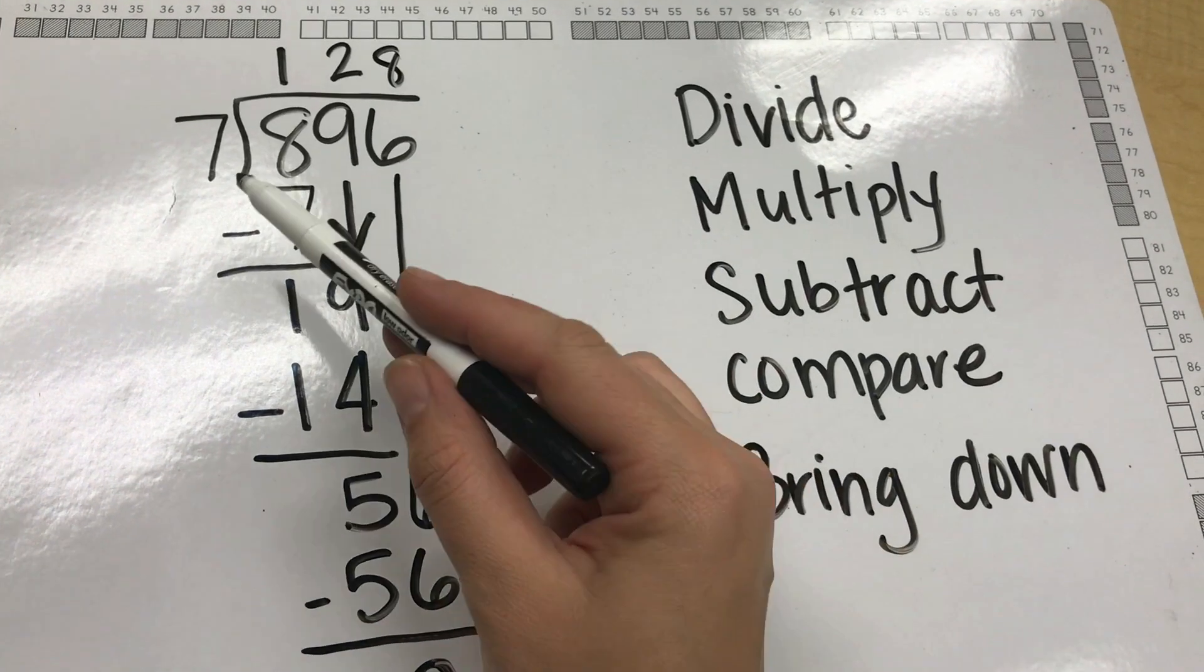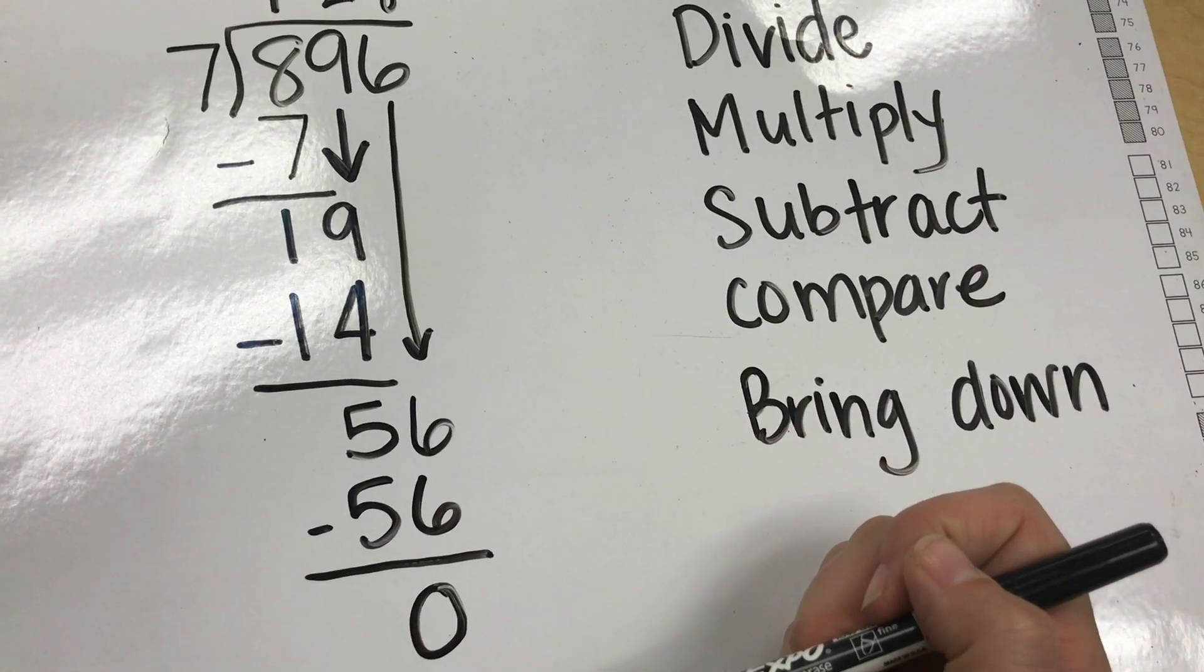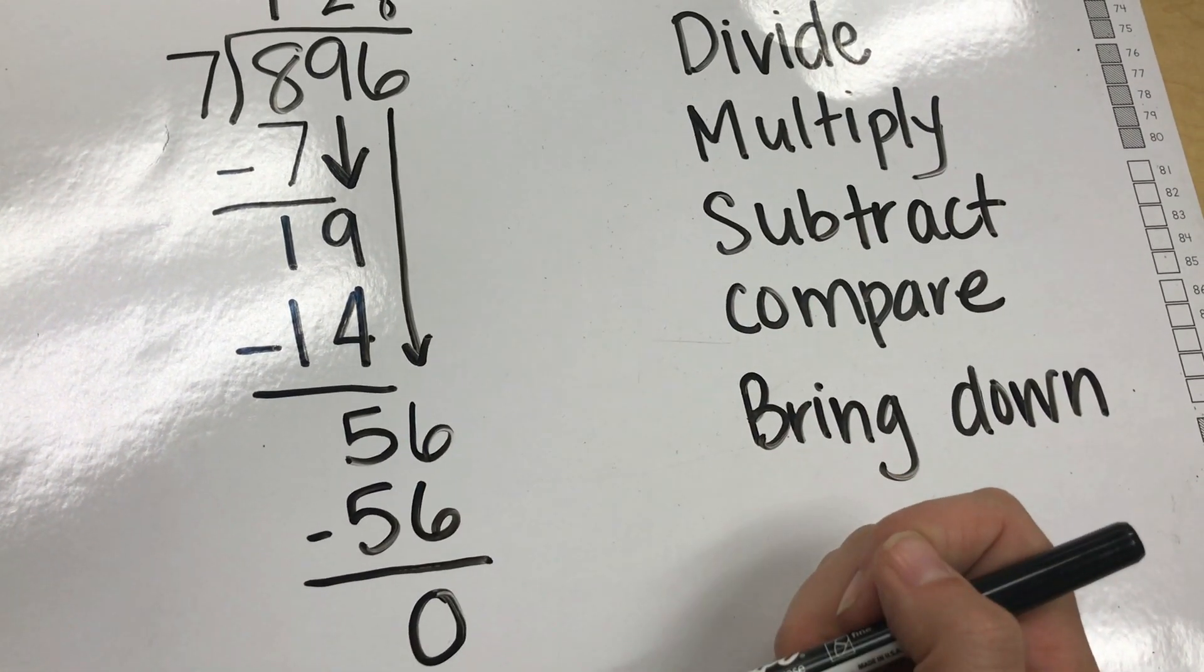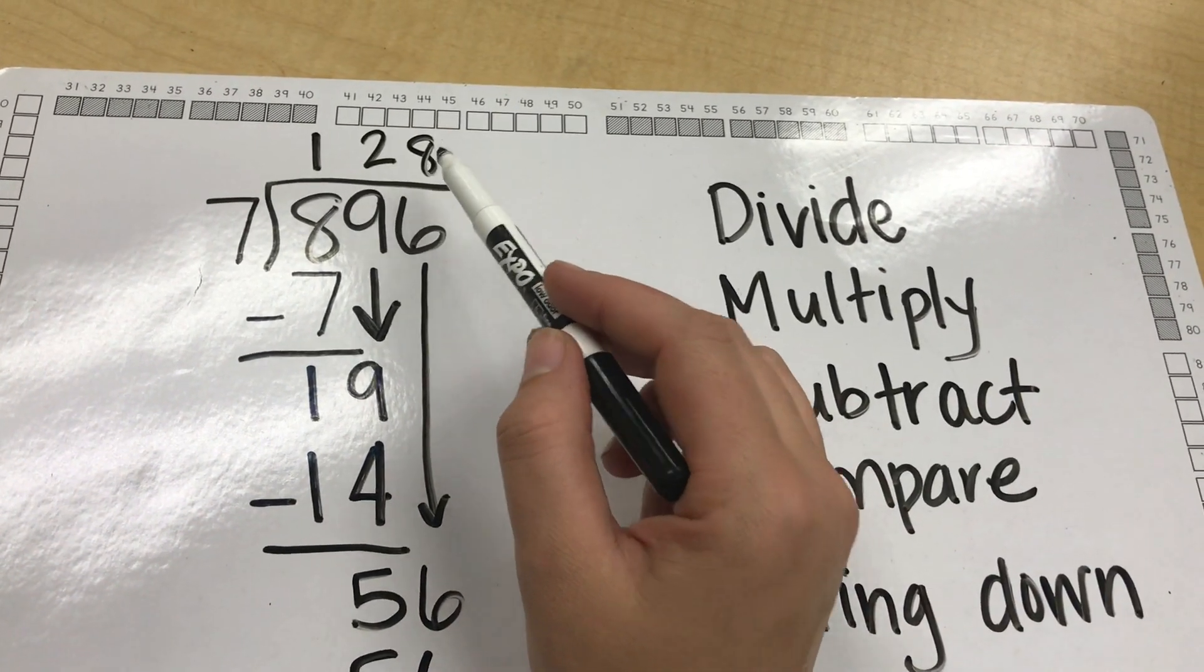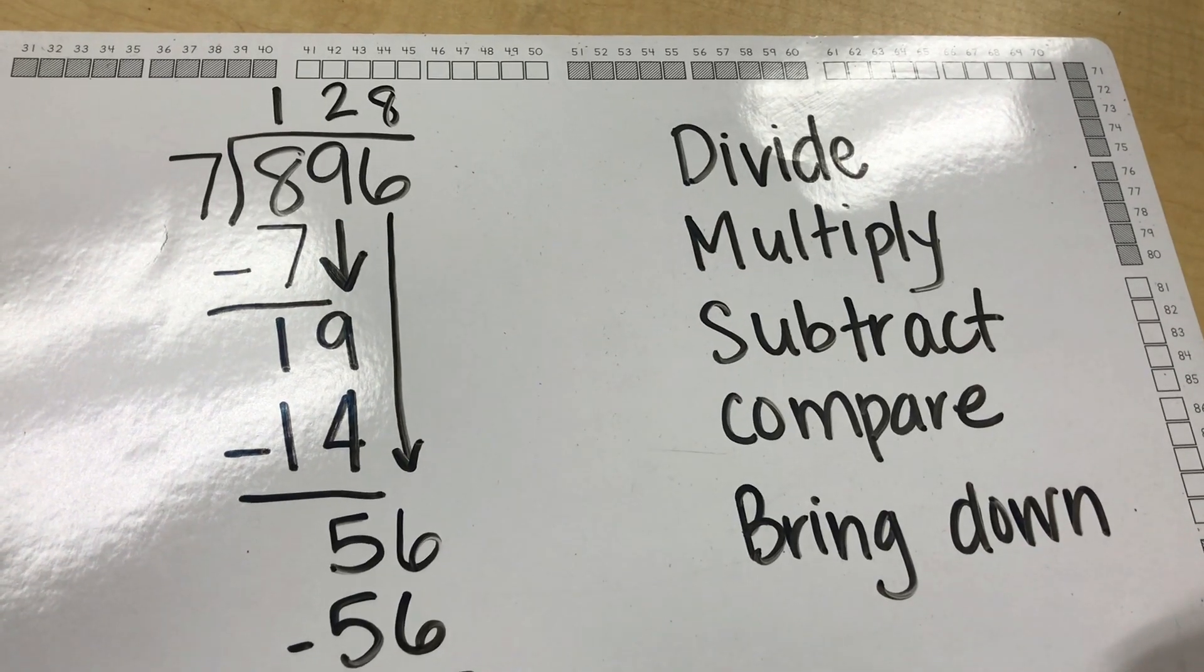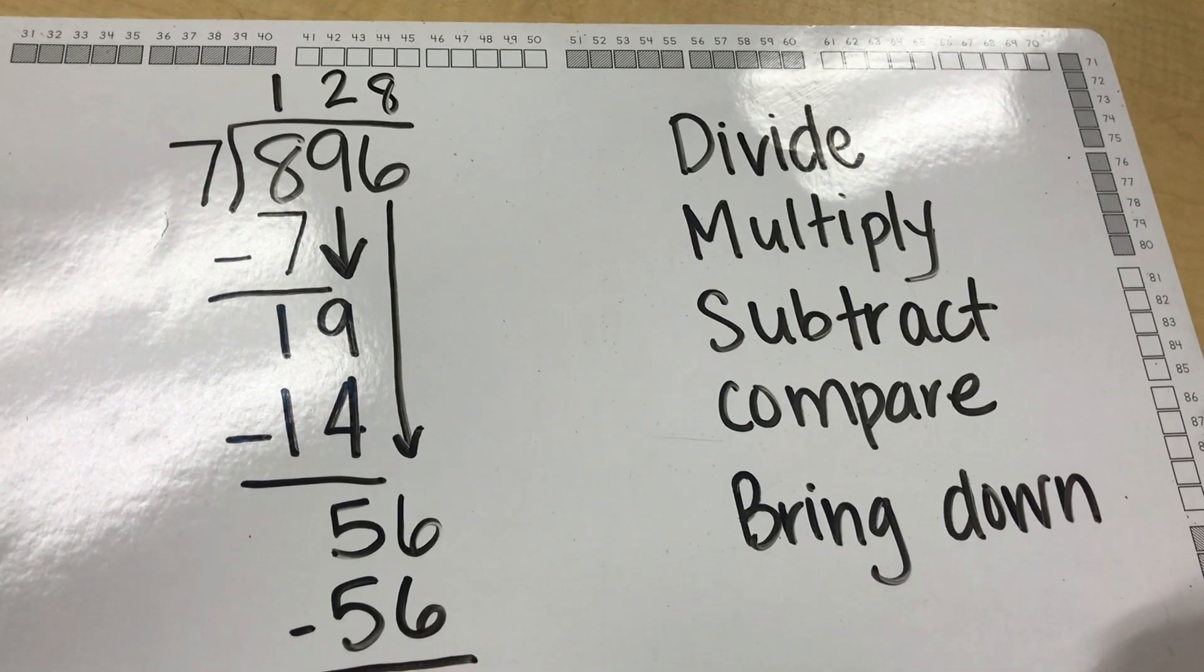So when I compare I can say that there is nothing else that I can do. 0 is the lowest that I can go. I am now done and my answer is 128. These are the steps to doing long division using the digit by digit method.